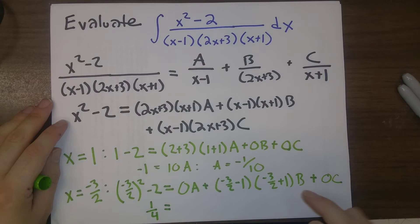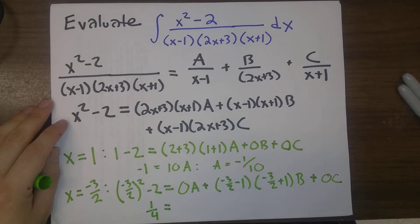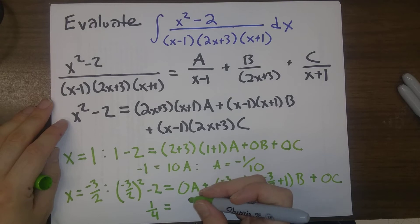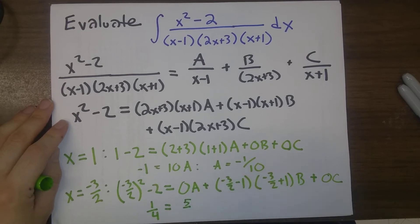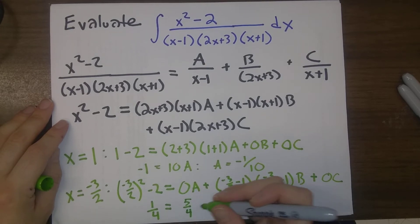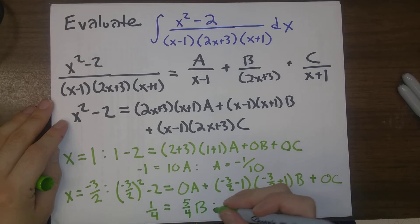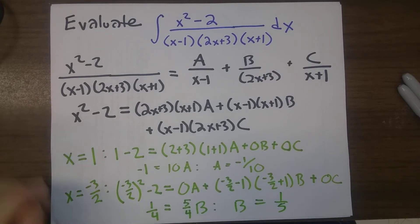And then, this ends up as, let's see here, minus 5 halves times minus 1 half. So, that is going to be 5 fourths times B. And this gives us B is 1 fifth.